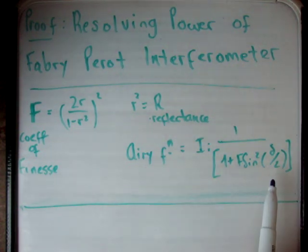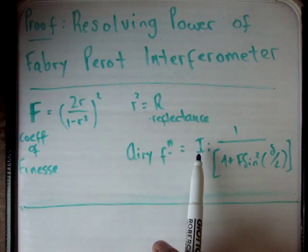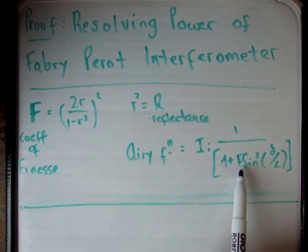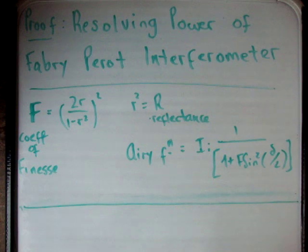And I'm going to define the Airy function here. It's the incident irradiance times 1 over 1 plus the coefficient of finesse times the sine squared delta over 2.